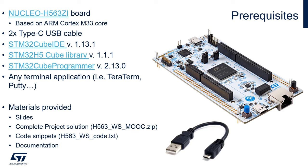You will also need a second USB Type-C cable. This one is used for USB examples or labs, as this connector is connected to the USB peripheral of the STM32 H5.